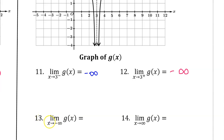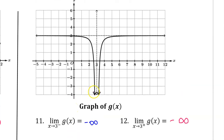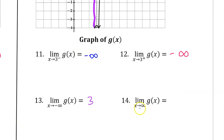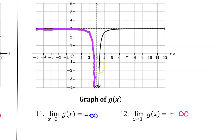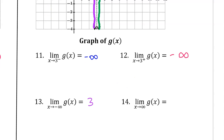For number 13, we need to find the limit as x approaches negative infinity of g of x. We trace the function going to the left. As x approaches negative infinity, the y values are leveling off at the horizontal asymptote. So the y value of that horizontal asymptote is the limit — it's not going any higher. So the limit is 3. For number 14, the limit as x approaches positive infinity of g of x: tracing the function to the right, g of x again levels out at the horizontal asymptote, so this limit is also 3.